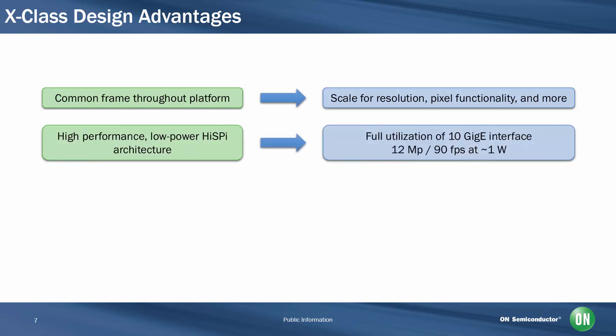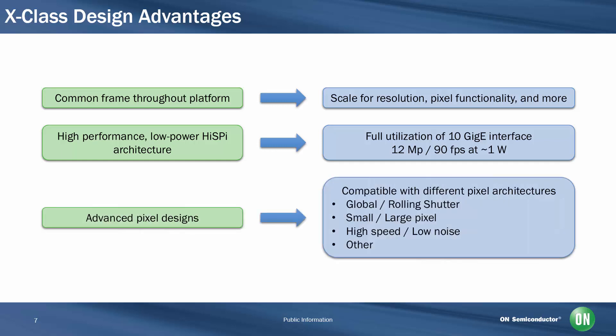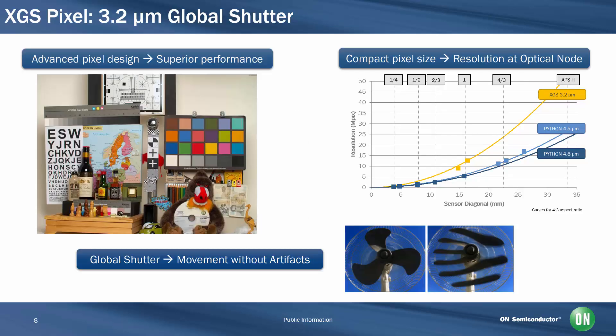The high-performance, low-power architecture of this frame allows full utilization of computer interfaces such as 10GigE, meeting the bandwidth needs of high-performance industrial applications with the low-power footprint required for compact and efficient camera designs. And the flexibility of the platform allows the use of advanced pixel architectures such as global or rolling shutter, or designs for high dynamic range and low noise, and more. The first pixel to be deployed in the X-Class platform is a 3.2 micron global shutter design, featuring superior imaging performance, high uniformity, and low noise.